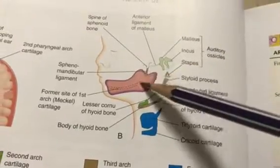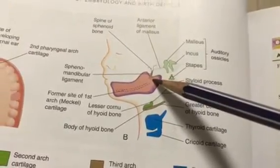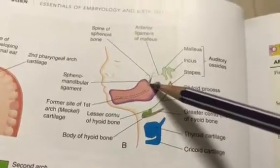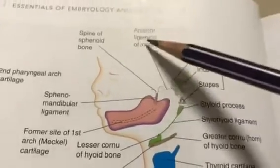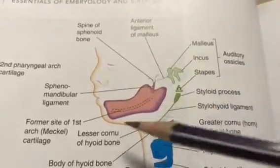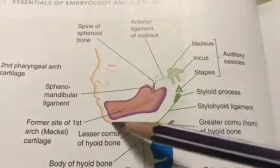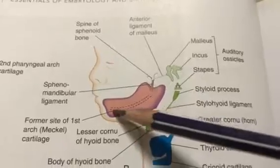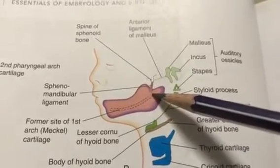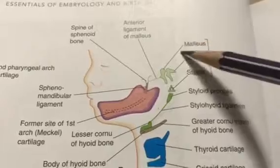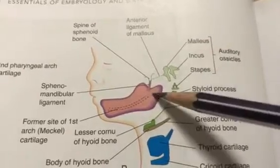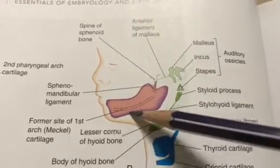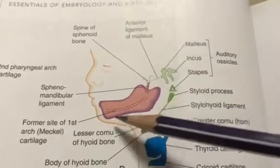The middle portion of the cartilage gets degenerated and regressed, and only the perichondrium — the outer covering of the cartilage — will remain. That will be transformed into the anterior ligament of malleus and the sphenomandibular ligament. The ventral part of the cartilage will remain and will form the future mandible. This cartilage is called Meckel's cartilage. So three derivatives: dorsal end ossifies and becomes bone, middle end degenerates and forms two ligaments, and the ventral end becomes the future mandible.